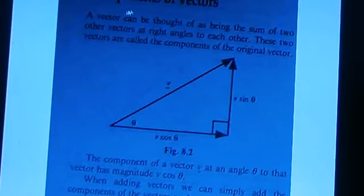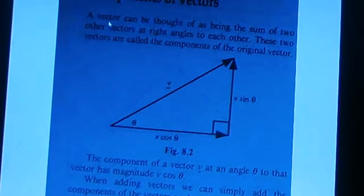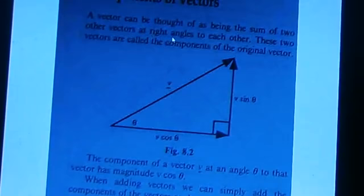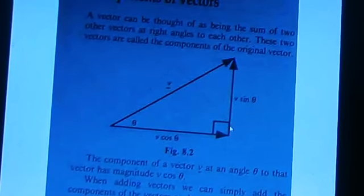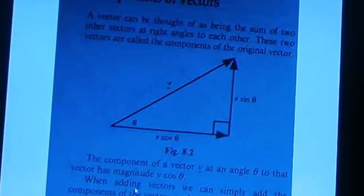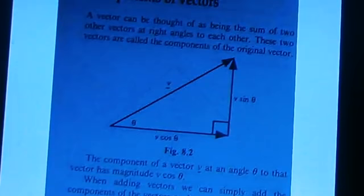Now we're talking about the components of the vector. A vector can be thought of as being the sum of two other vectors at right angles to each other. These two vectors are called the components of the original vector. The component of a vector V at an angle theta to that vector has magnitude V cos theta. When adding vectors we can simply add the components of the vectors.